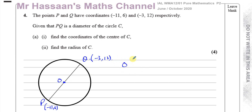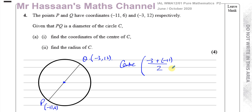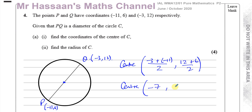The coordinates of the center of the circle are going to be the average of the x-coordinates, which is minus 3 plus minus 11, add them together and divide by 2; and the average of the y-coordinates, which is 12 plus 6 divided by 2. So the center is minus 14 divided by 2, which is minus 7, and 18 divided by 2, which is 9. So the center of the circle is minus 7, 9.